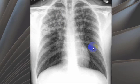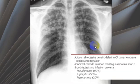These findings are suggestive of cystic fibrosis. Cystic fibrosis is an autosomal recessive genetic defect with abnormal chloride transport, resulting in abnormal mucus production, bronchiectasis, and infection.